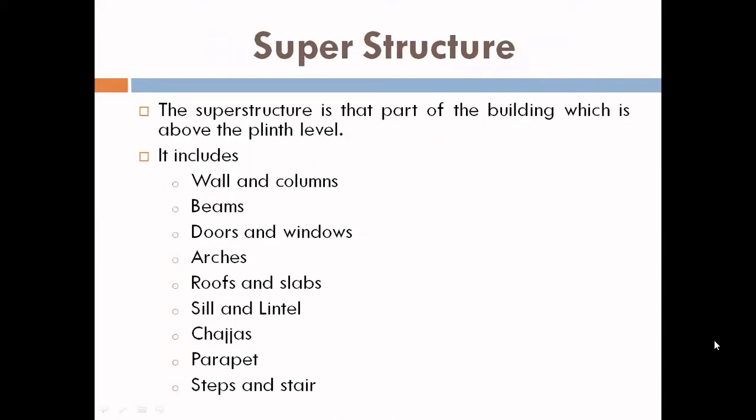The superstructure is that part of a building which is above the plinth level. It includes walls and columns, beams, doors and windows, arches, roofs and slabs, sill and lintel, chajjas, parapet, steps and stairs.